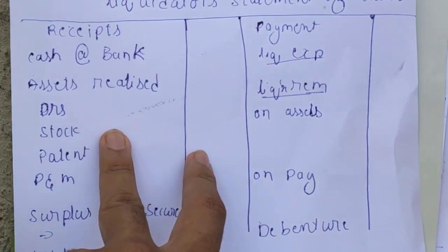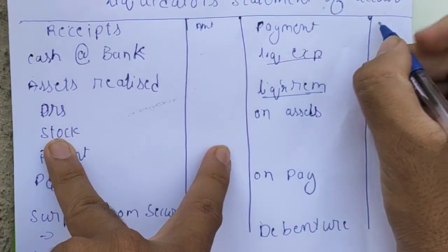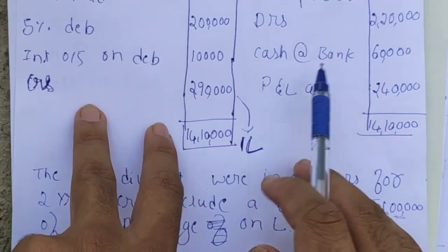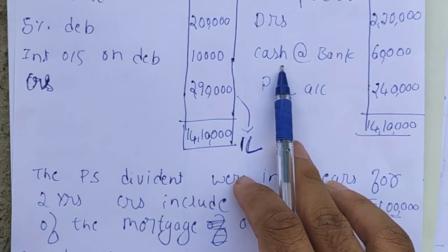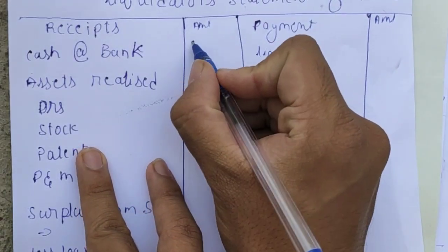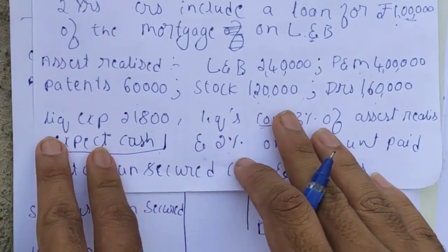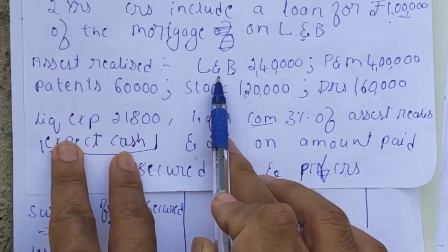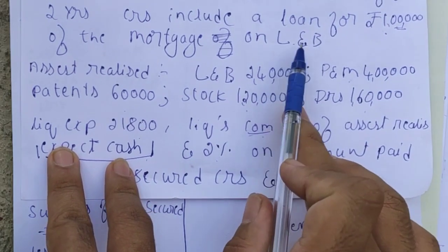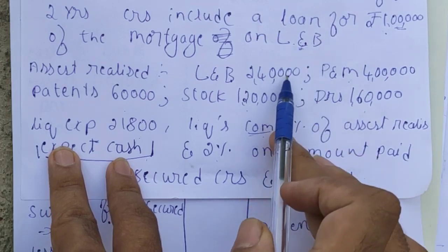Now let us prepare the Liquidator's Final Statement of Account. On the receipts side, we always start with cash in hand since it is a liquid asset — cash at bank is Rs.60,000. Then we write assets realized: land and building realized Rs.2,40,000, but since land and building is a secured asset secured against a creditor, we will write only the remaining assets.